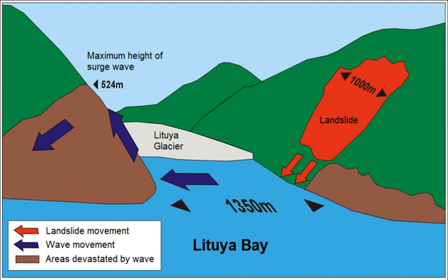Some geologists consider an unstable rock face at Mount Breakenridge, above the north end of the giant freshwater fjord of Harrison Lake in the Fraser Valley of southwestern British Columbia, Canada, to be unstable enough to collapse into the lake, generating a megatsunami that might destroy the town of Harrison Hot Springs, located at its south end.